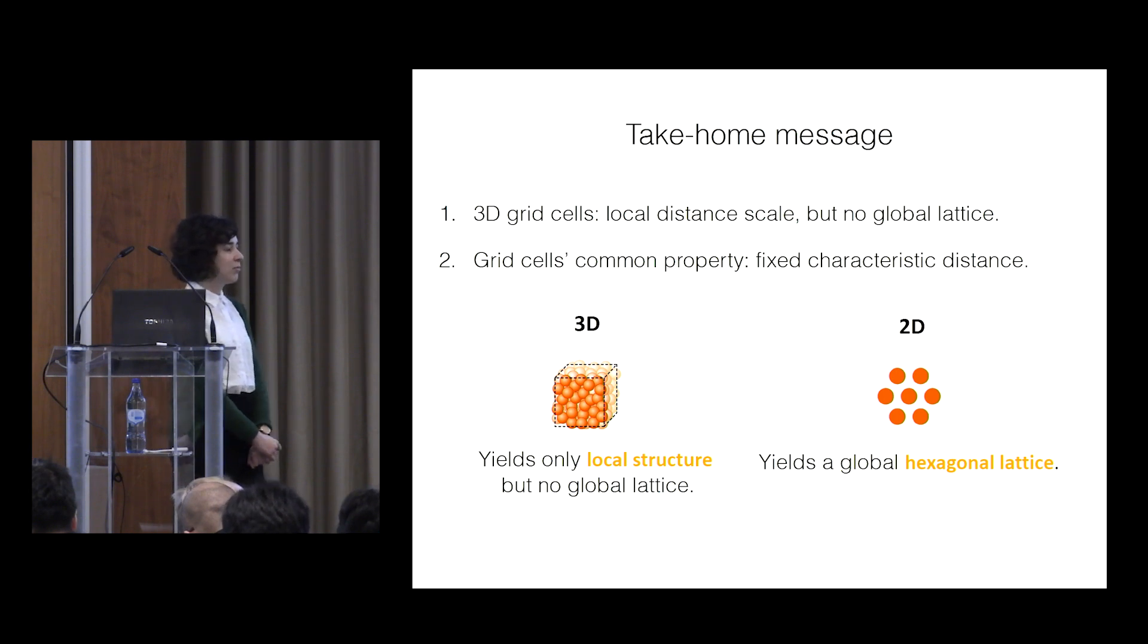and then suddenly it's representing 3D, and so it makes me wonder whether it's using a fundamentally 2D representation to model the third dimension, or whether it actually has a third dimension of its manifold.